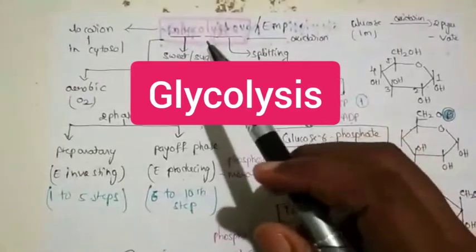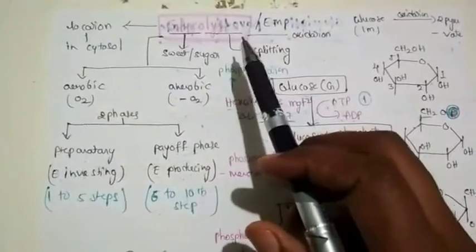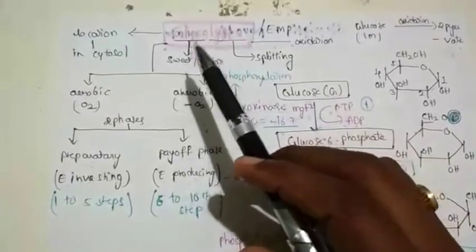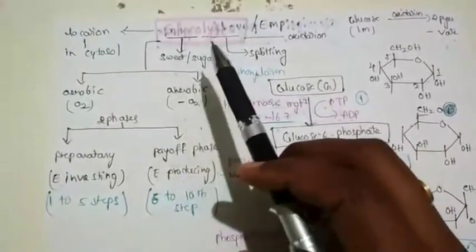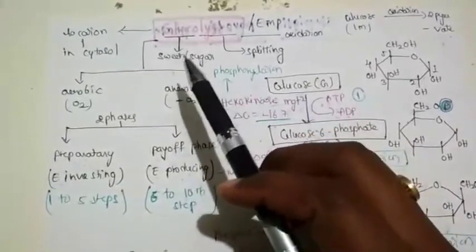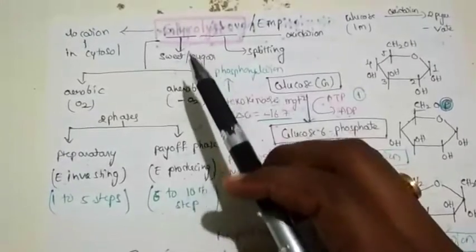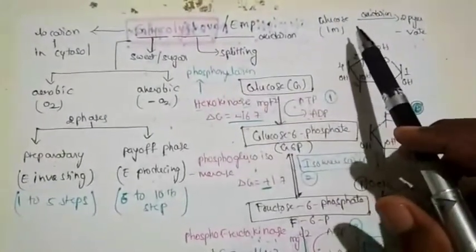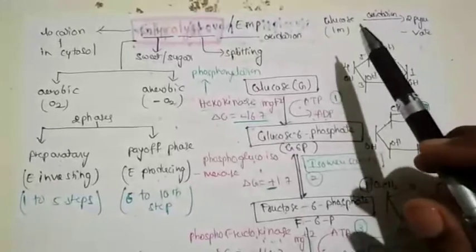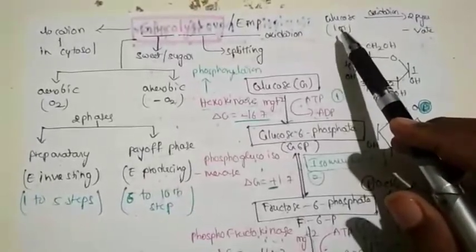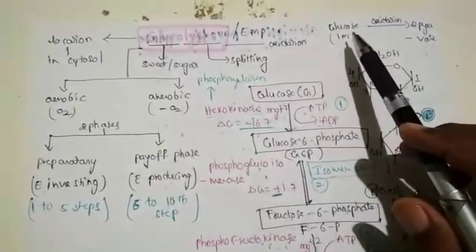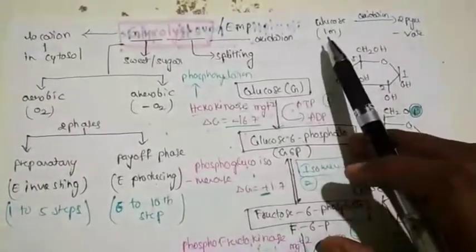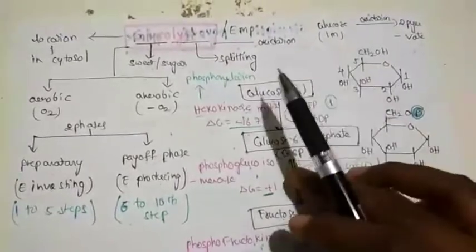Our topic is glycolysis. Glycolysis is also called the Embden-Meyerhof pathway. It is an oxidative process that takes place in the cytosol of the cell. Glyco means carbohydrate and lysis means splitting or breakdown. Glycolysis is mainly responsible for the conversion of the six-carbon compound glucose, or any other carbohydrate, into two pyruvate molecules.